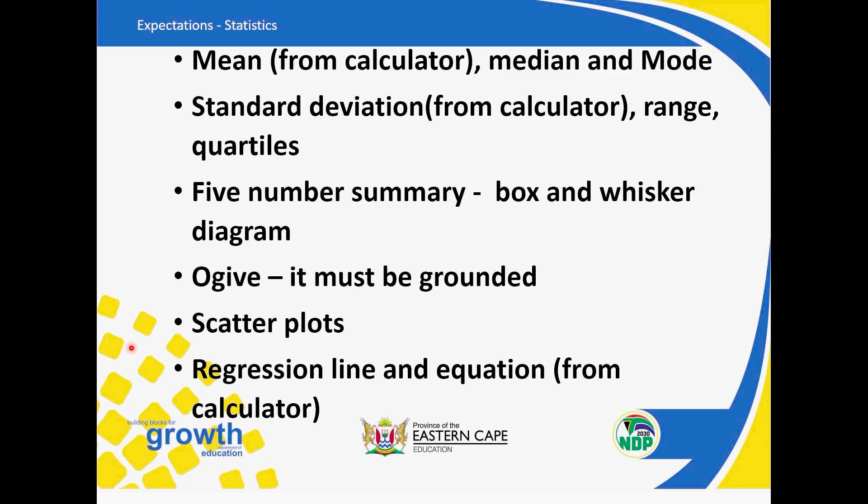Ogive, it must be grounded. That is a cumulative frequency curve. One mark, be sure that it's grounded. Then the other mark is to use your maximum upper class boundary with your cumulative frequency.